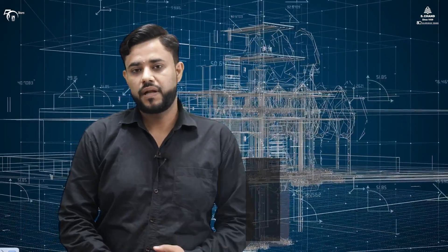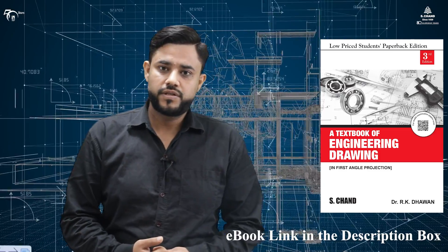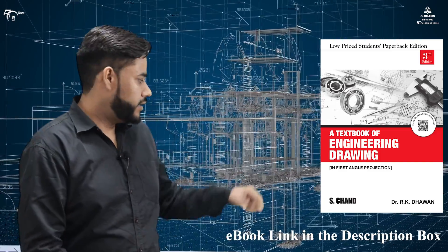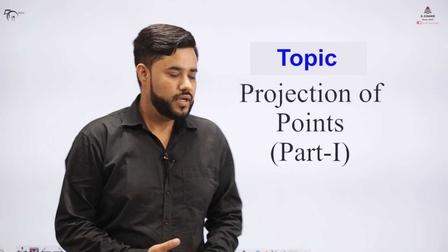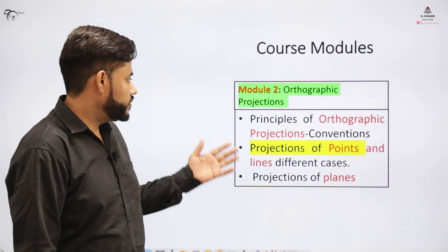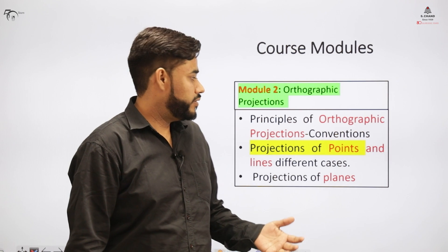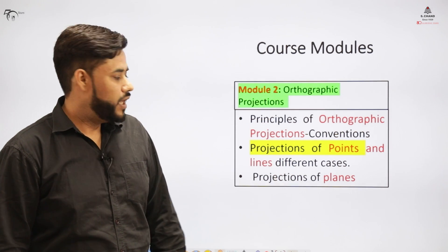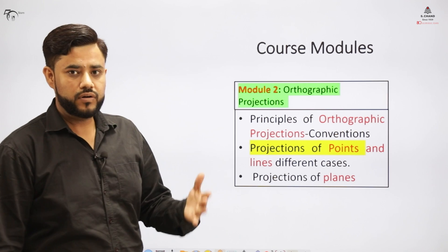We will be having a concept clarity on the topic of orthographic projections. Detailed concepts are available in the book by S.Chan Publishing — click the link in the description to download your copy. This is Lecture 5 of the series. We have already covered the principle of orthographic projections, basic conventions, and introduction. In this lecture, we'll be covering the projection of points, and later we'll cover lines and planes.